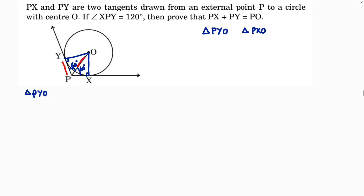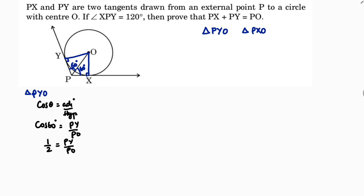In triangle PYO, Py is the adjacent side and Po is the hypotenuse. So I will use cos theta. Cos theta equals adjacent over hypotenuse. Therefore cos 60 equals Py over Po. The value of cos 60 is 1/2, so 1/2 equals Py over Po. Therefore Po equals 2 times Py. This is equation 1.